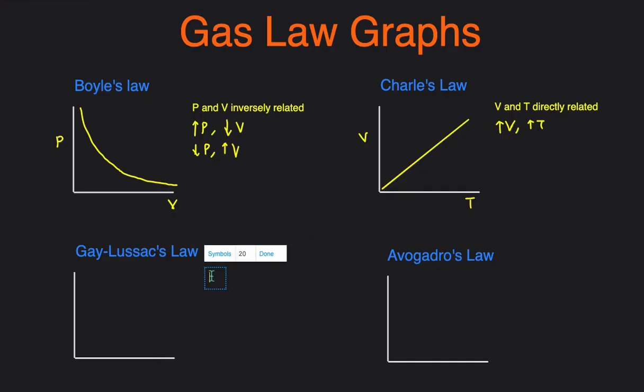Next, Gay-Lussac's Law states that pressure and temperature are directly related. So as temperature goes up, the pressure will go up as well. Since it's a direct relationship, it'll just be a straight line like the line you see in Charles' Law. We'll put pressure over here and temperature over here, but they're interchangeable.